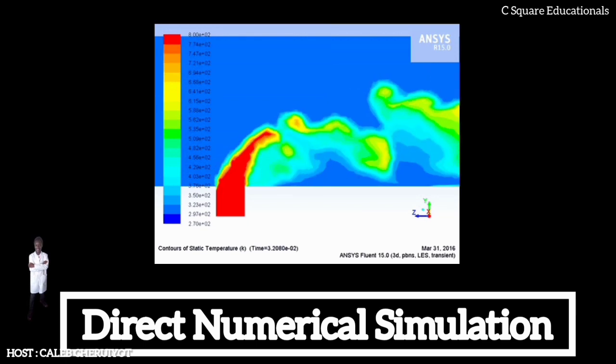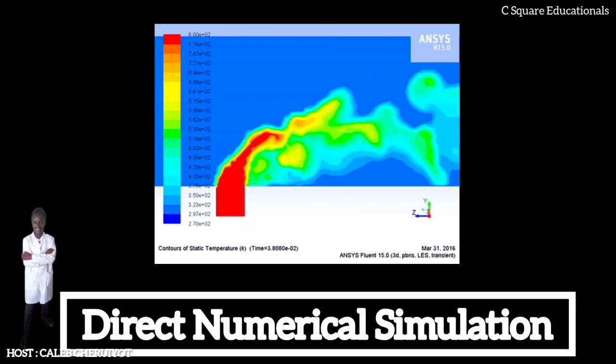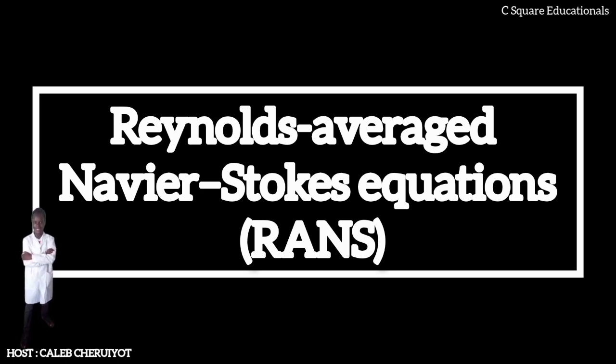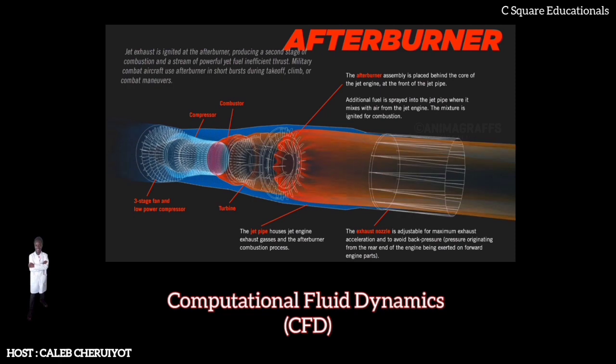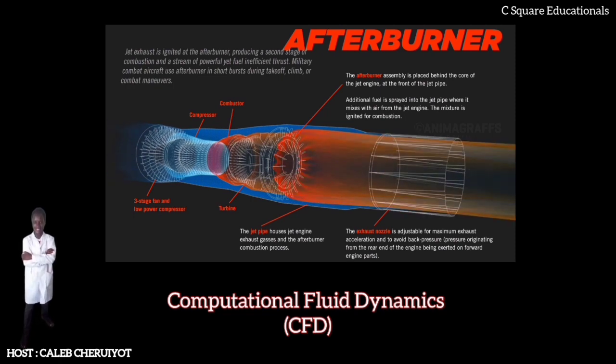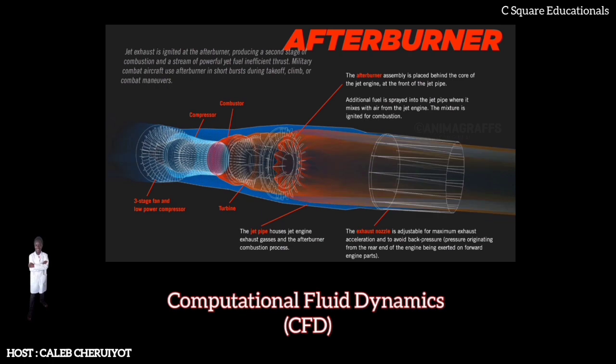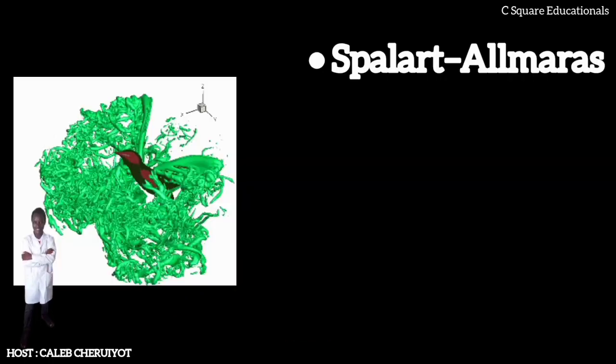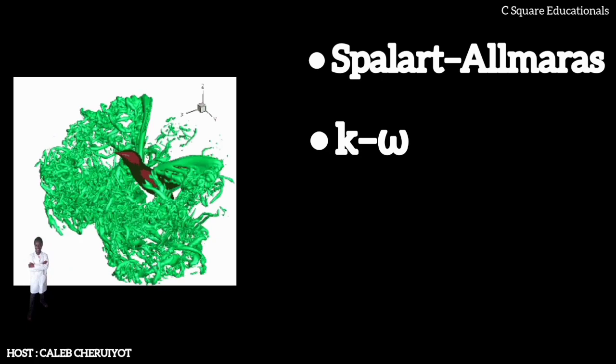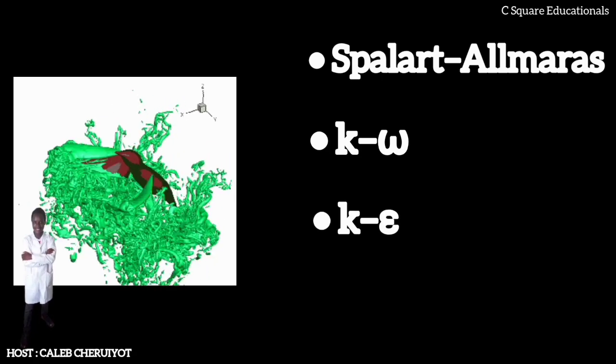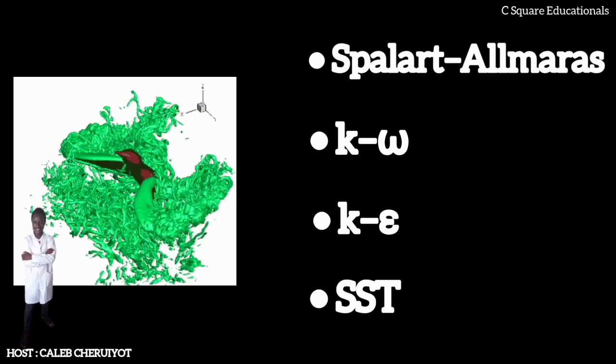To counter this, time-averaged equations such as the Reynolds averaged Navier-Stokes equations, supplemented with turbulence models, are used in practical computational fluid dynamics applications when modeling turbulent flows. Such models include the Spalart-Allmaras, K-Omega, K-Epsilon, and SST models, which add a variety of additional equations to bring closure to the RANS equations.